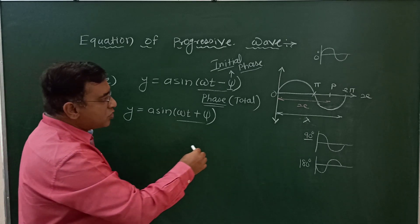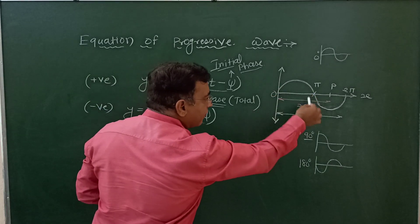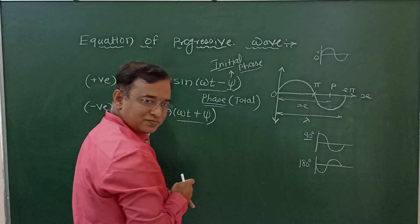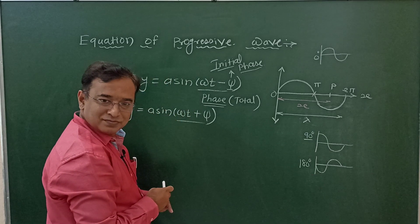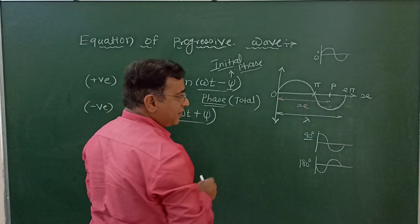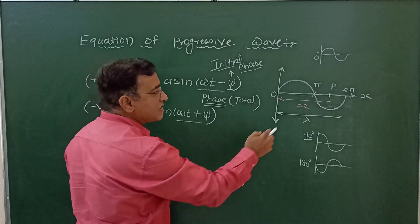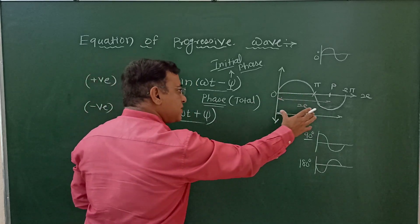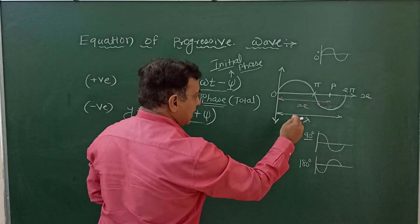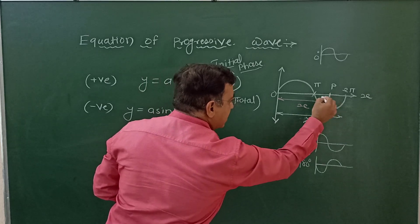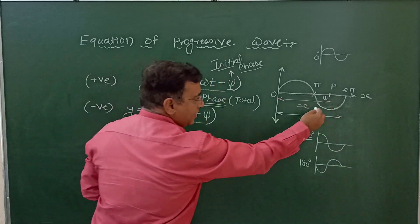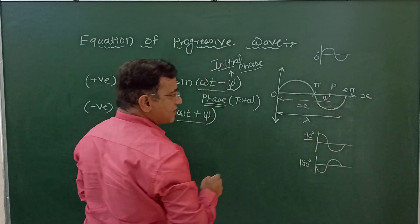When I am going to consider the total wave, at any point P at a distance x, I am going to count its phase phi. At that place I am going to count that phase. In this equation, let us consider the wave is traveling along the x direction, so I am going to utilize this equation.